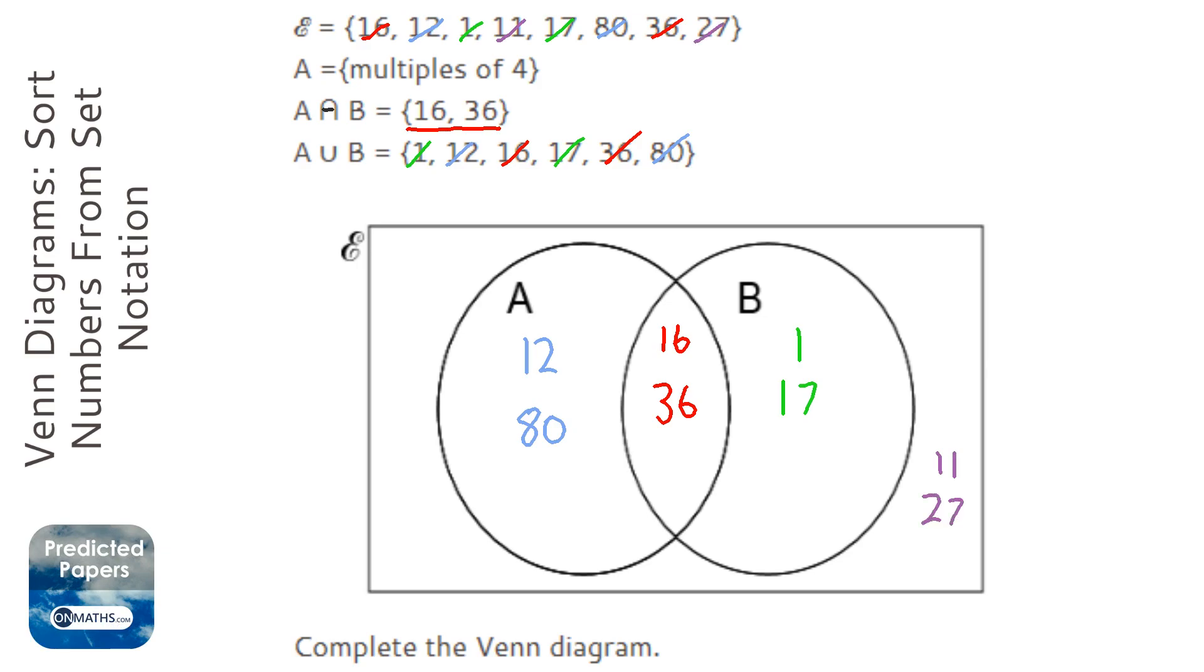And I always just check by adding up how many numbers I've put down. So 1, 2, 3, 4, 5, 6, 7, 8. And I should have put down - counting the numbers at the top - 1, 2, 3, 4, 5, 6, 7, 8. So chances are I've got it right.